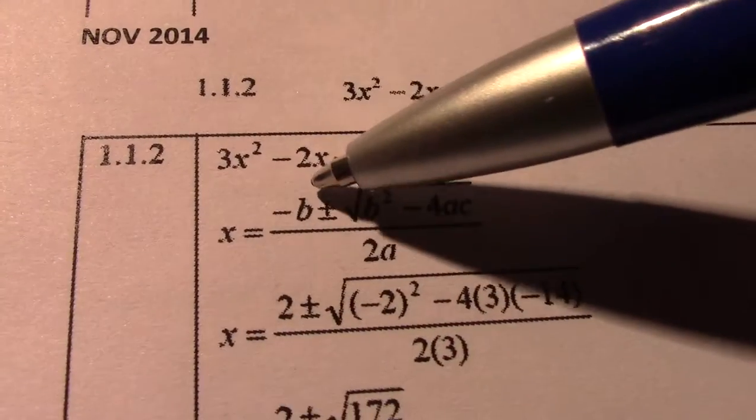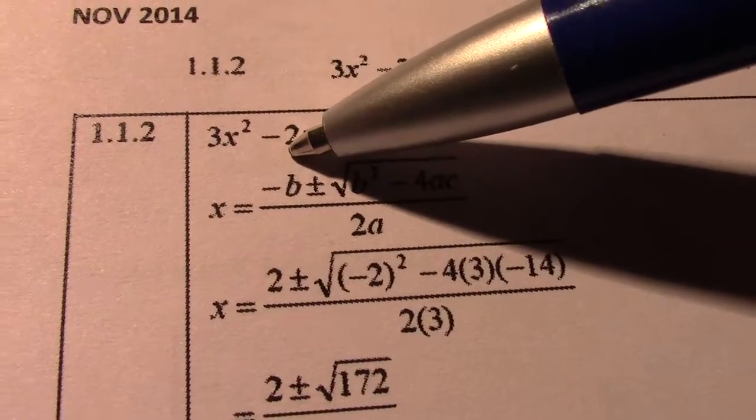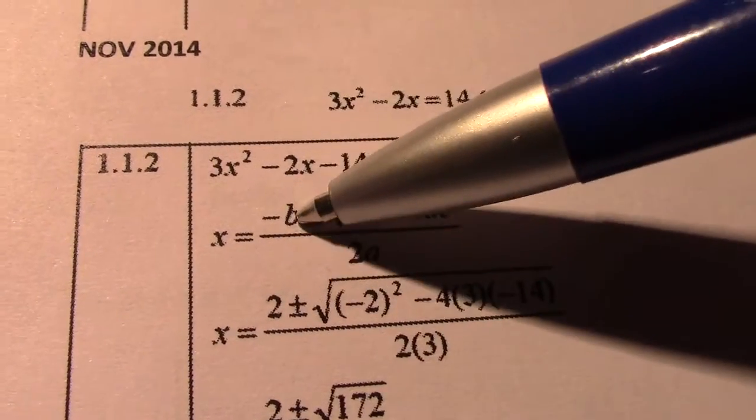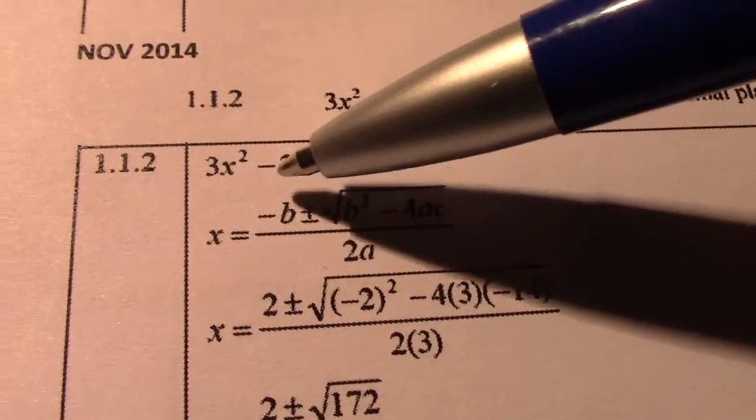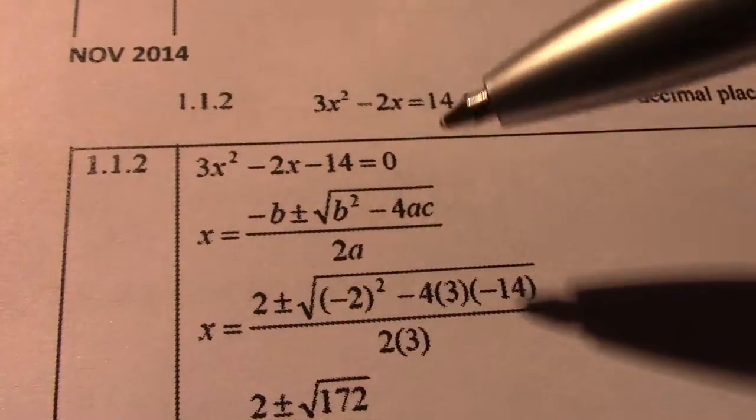Again, we're trying to catch you out. You see there, the p-value is negative 2. So, negative b, negative times negative 2, would become positive 2.